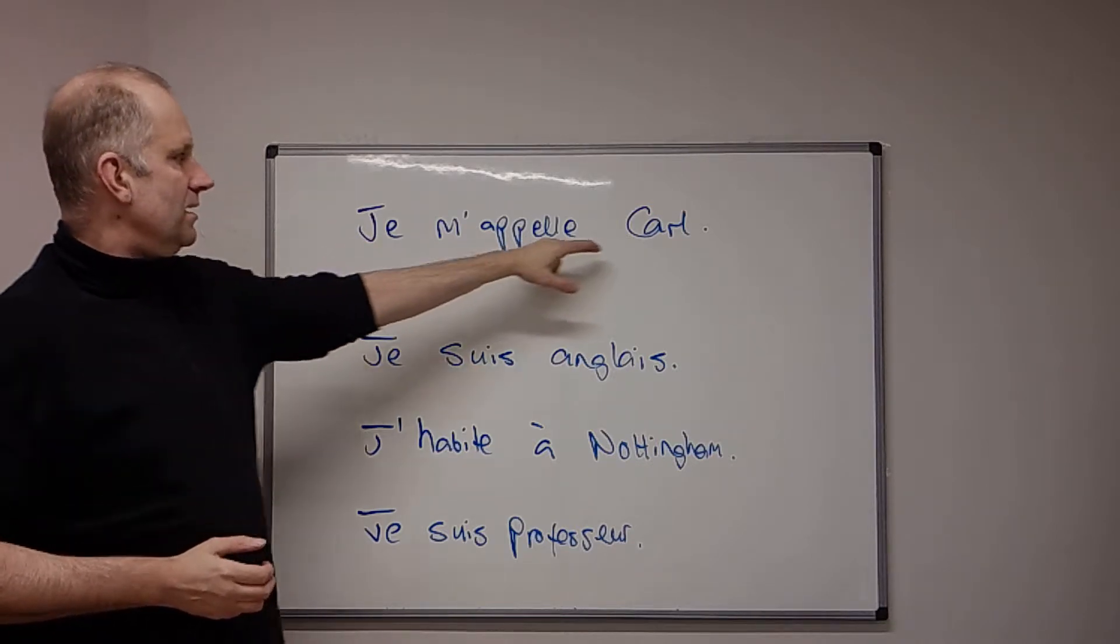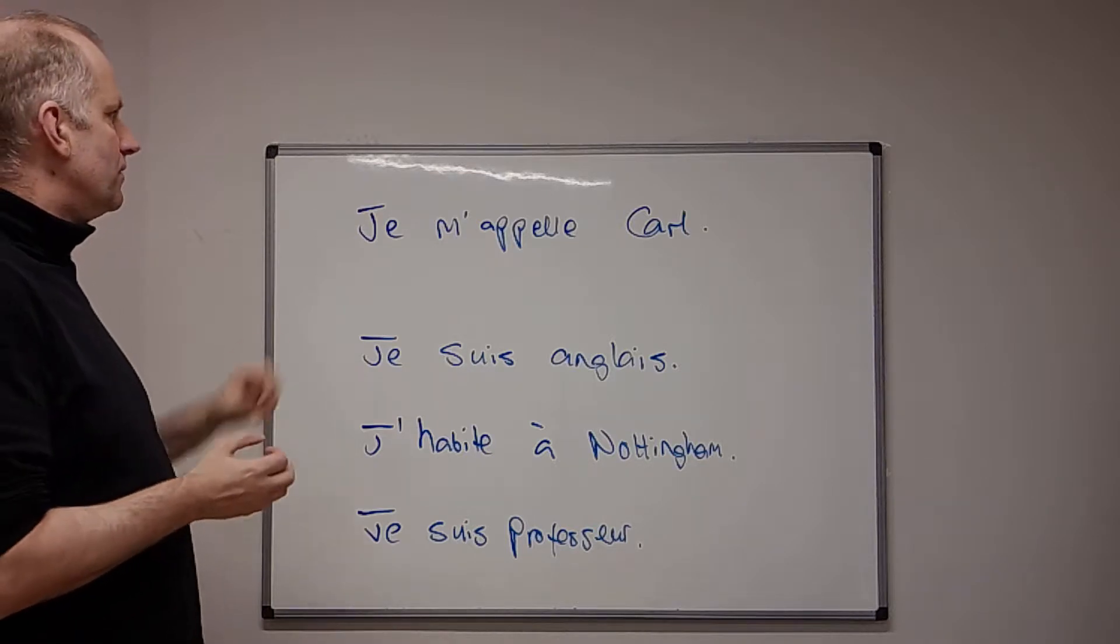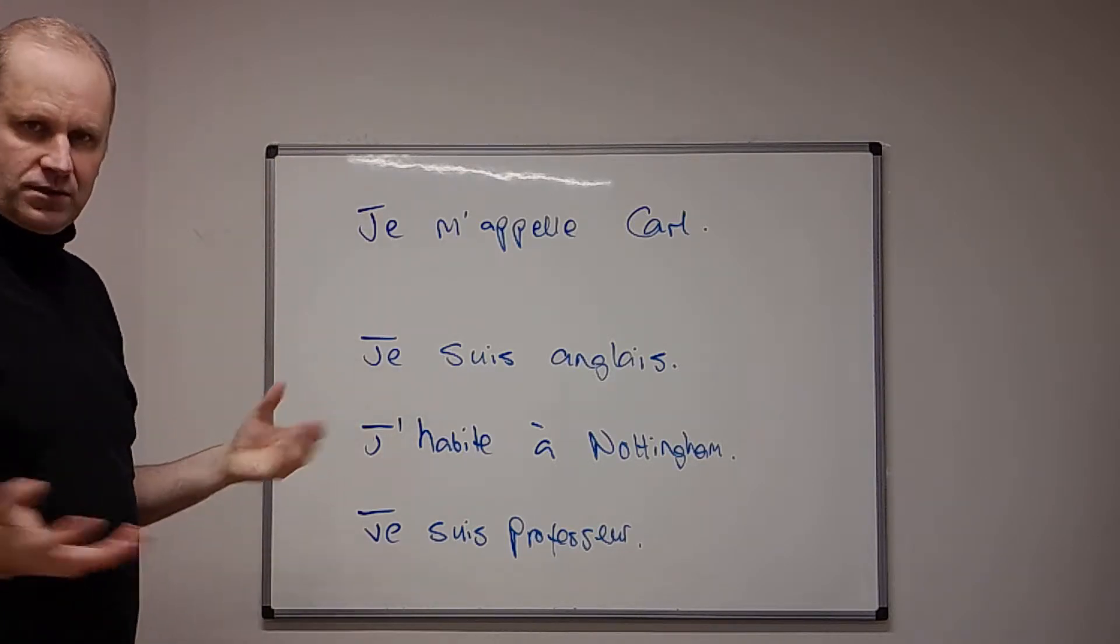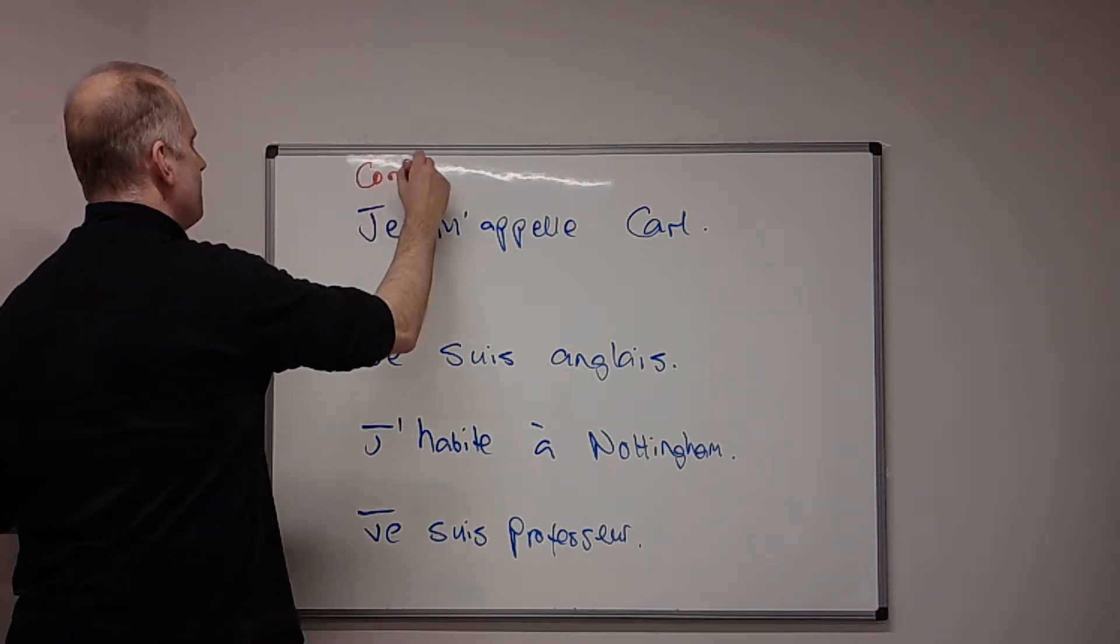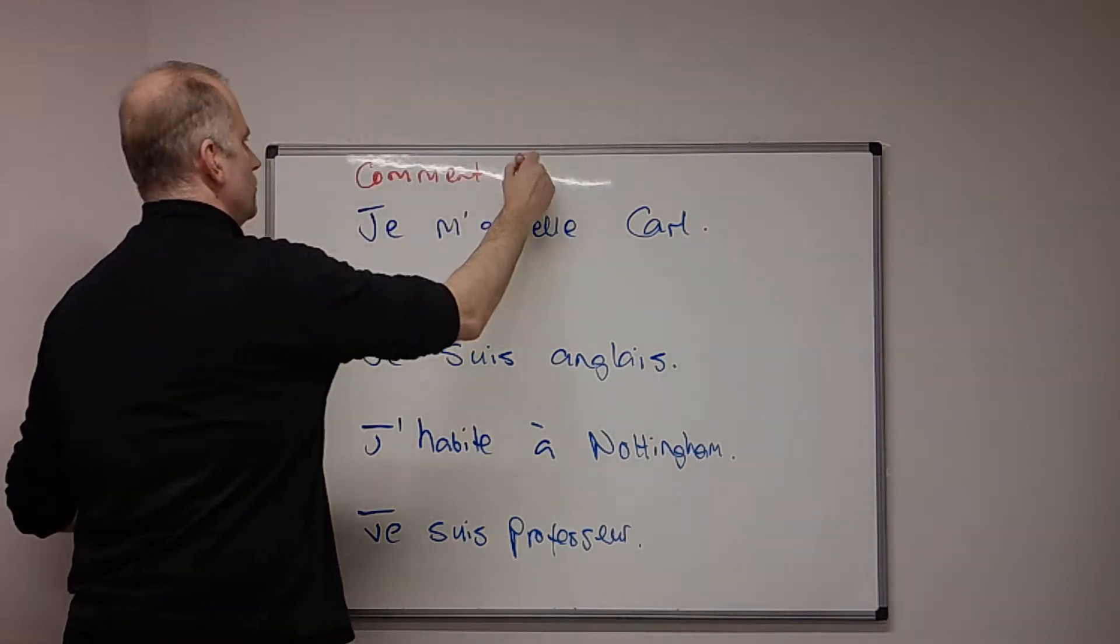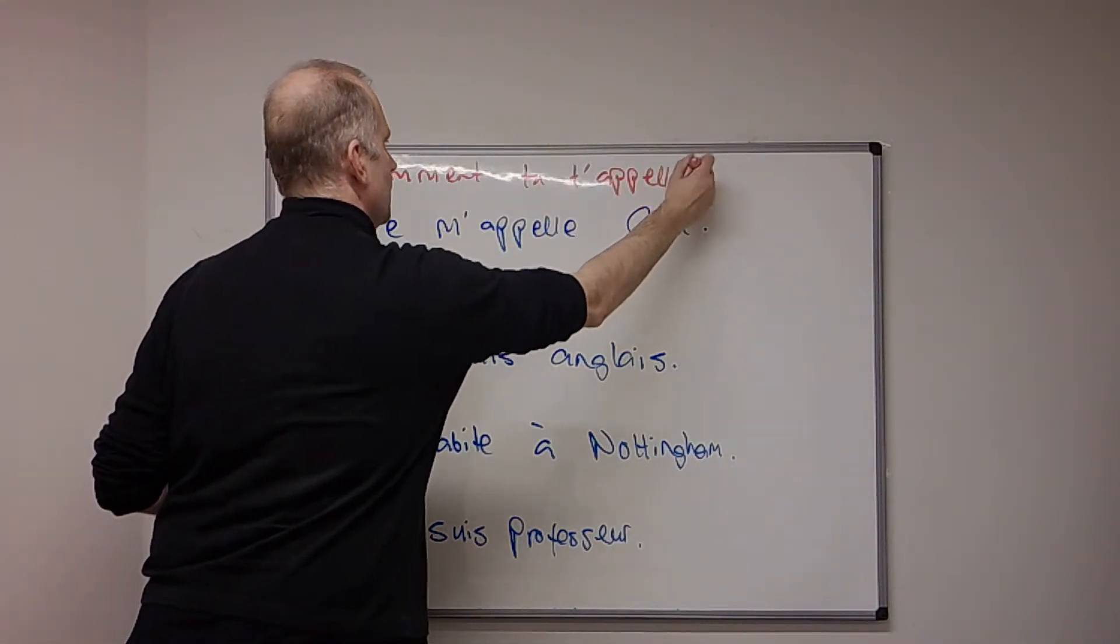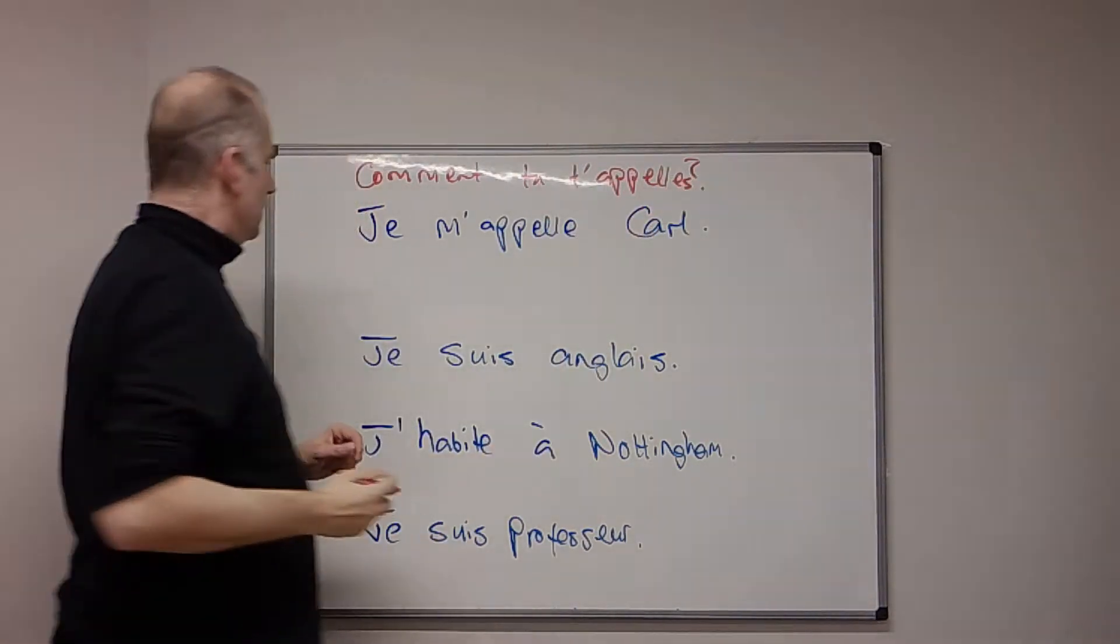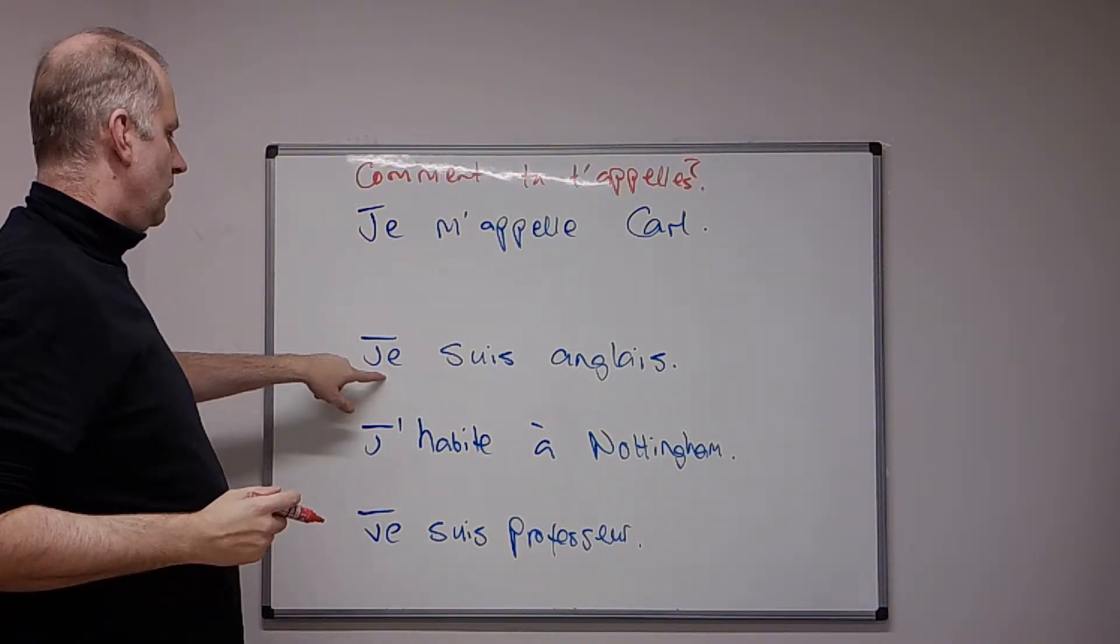Je m'appelle Carl. So that's, I'm called Carl. So the first question would be, what's your name? What are you called? So it's, comment tu t'appelles? Comment tu t'appelles? Okay, and then come back to this one.